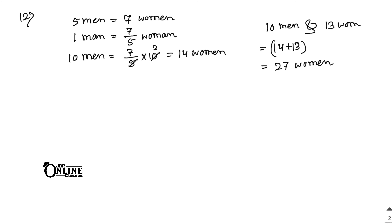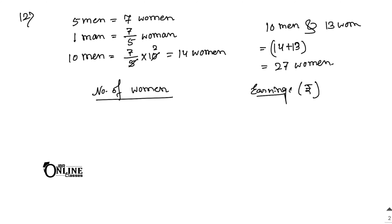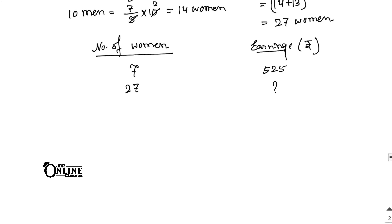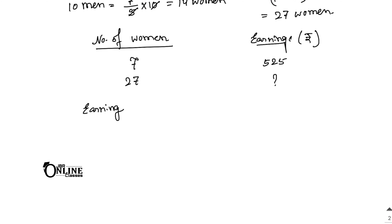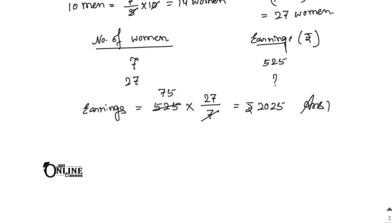Now set up the table with number of women and earning in rupees. For 7 women the earning is 525 rupees; for 27 women the earning is unknown. Earnings equal 525 multiplied by 27 divided by 7. Dividing 525 by 7 gives 75, and 75 multiplied by 27 equals 2025. So rupees 2025 is the answer.